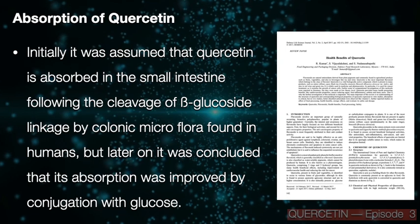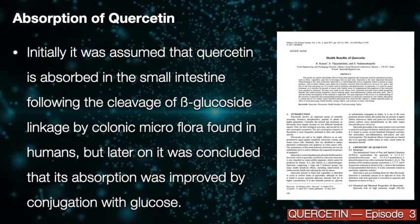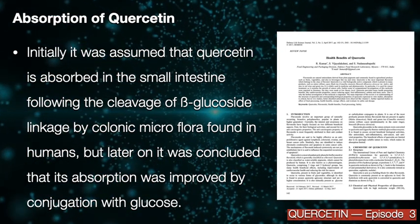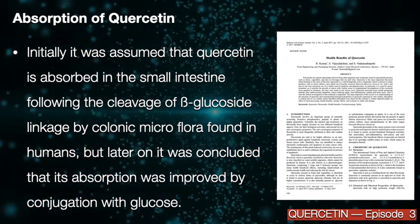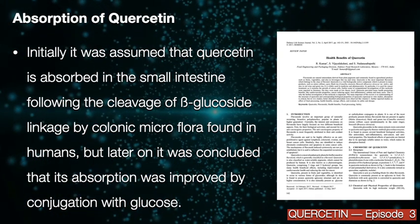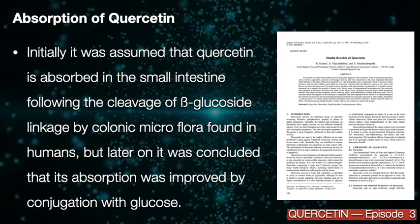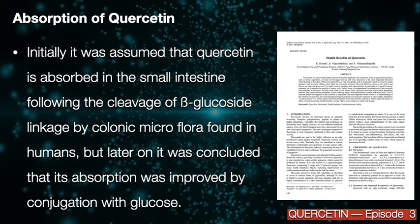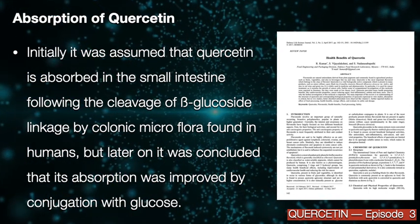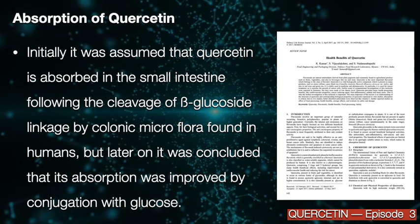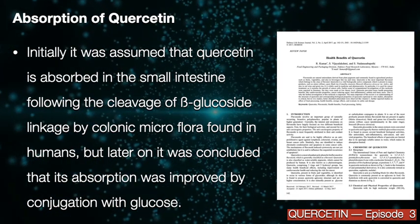Absorption of quercetin. Initially it was assumed that quercetin is absorbed in the small intestine following the cleavage of beta-glucoside linkages by colonic microflora found in humans, but later on it was concluded that its absorption was improved by conjugation with glucose.